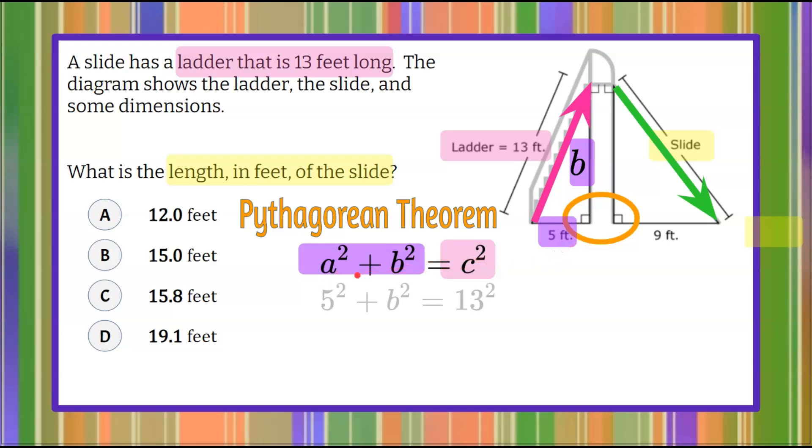We're going to use a squared is 5. 5 squared plus our unknown side, b squared, is equal to our longest side, our hypotenuse, 13 squared. 5 squared is 25 plus b squared, and 13 squared is 169. We want to solve for b squared by subtracting 25 from each side, which gives us b squared equals 144.